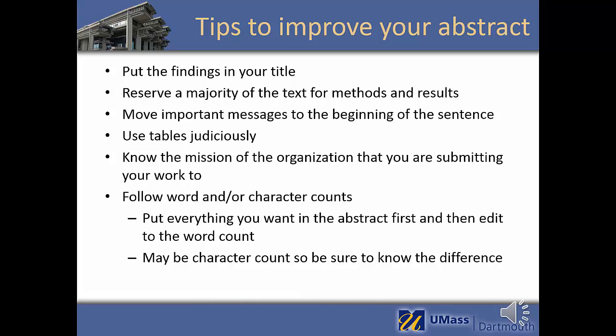Another important tip — one I very often see beginners miss — is to reserve a majority of your text for the methods and results sections. For example, if you need to submit a 500-word abstract, you don't want to have 300 words on the background. The methods section describes the rigor of the study, and the results describe what you're adding to the literature that hasn't been known before — what's new and different. People often put a lot of information in the literature review, but you really want to do the opposite and put most of your text in the methods and results sections.